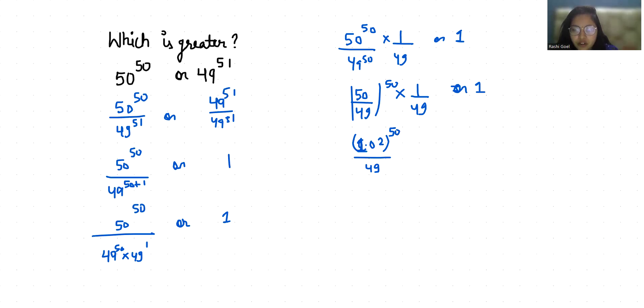1 power is 1, so we consider as 1 times 1 by 49 or 1. When we divide 1 by 49, we get 0.02. And here is 0.02 and here is 1, so obviously 1 is greater. And in place of 1 in the question it is 50 power 50 by 49 power 51.